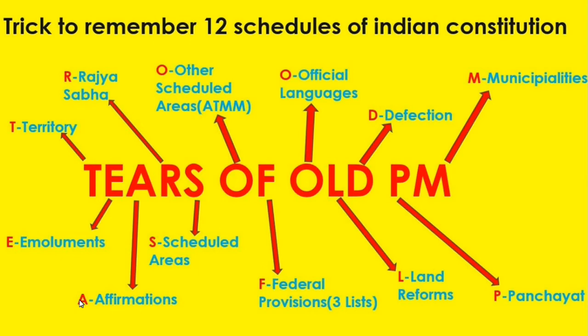Federal provisions come under the Seventh Schedule, which has three lists: Union List, State List, and Concurrent List. The Concurrent List has subjects where both the Union Government and State Government can make laws - for example, education. Official languages, land reforms, the anti-defection law, Panchayat, and municipal provisions are also covered in various schedules.